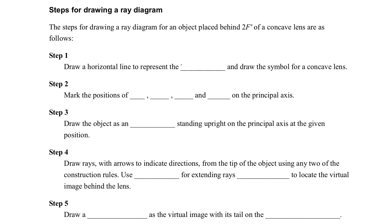So go through the step again. Step one, we will draw a horizontal line to represent the principal axis. And draw the concave lens. And we will mark down the focus, f, f dash, 2f, and 2f dash.